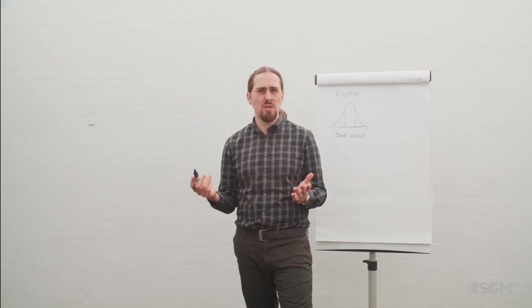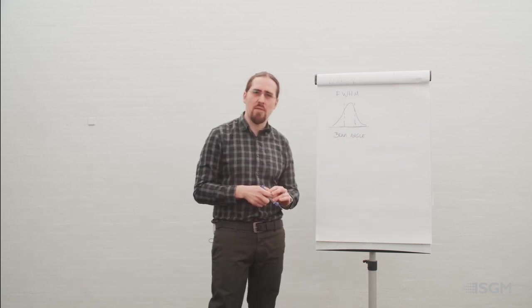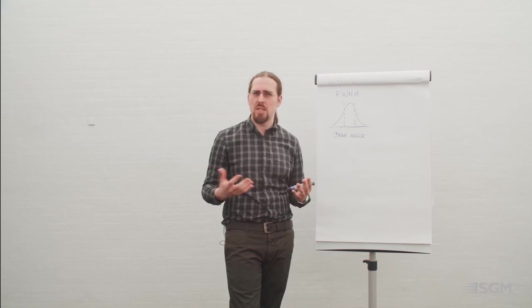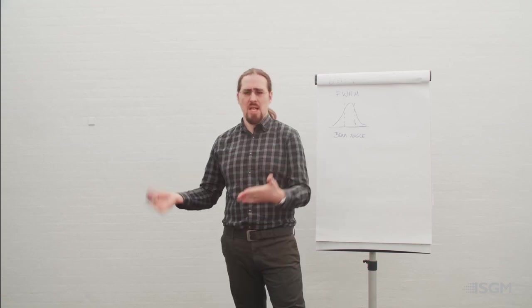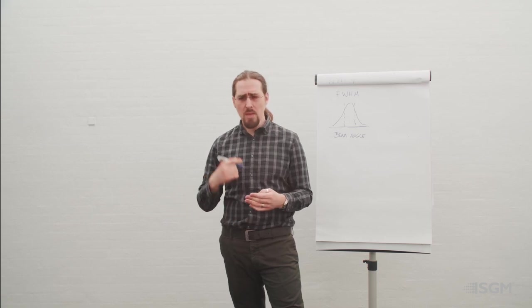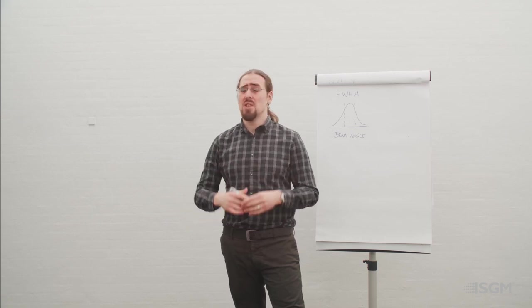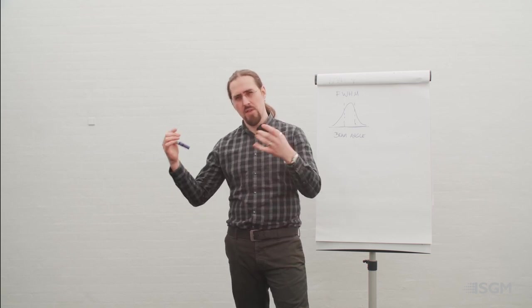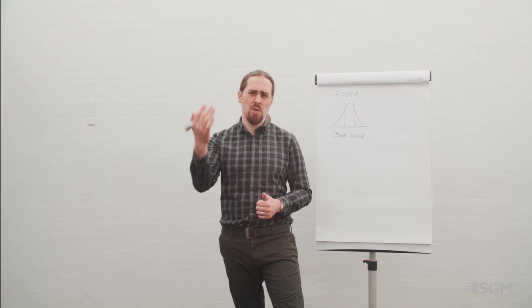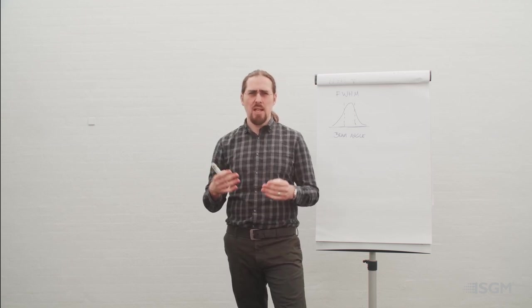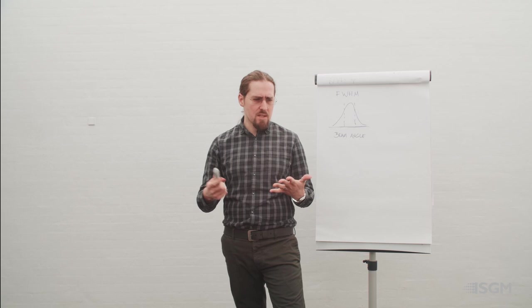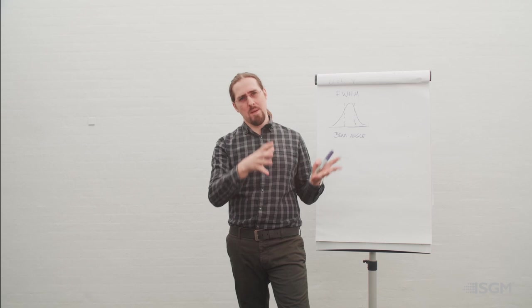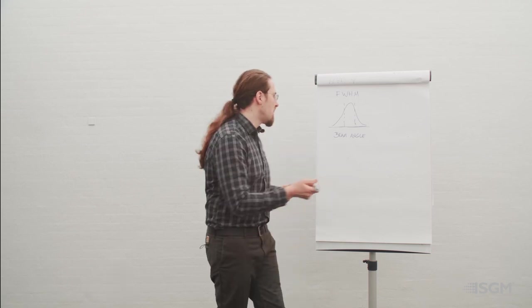We really need to know this value unless we physically have the unit and have our own routines for evaluating how the light works. But sometimes you don't know the fixture. You have different tools — the best tool is always to physically have the fixture and play with it. If you don't have that chance, you can use photometrics, which will give you information about the beam angle.